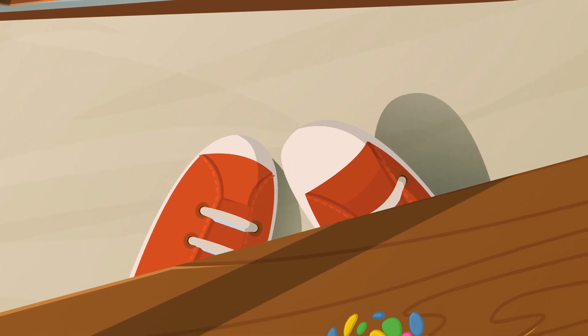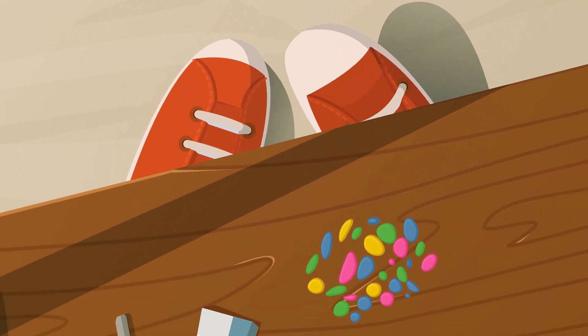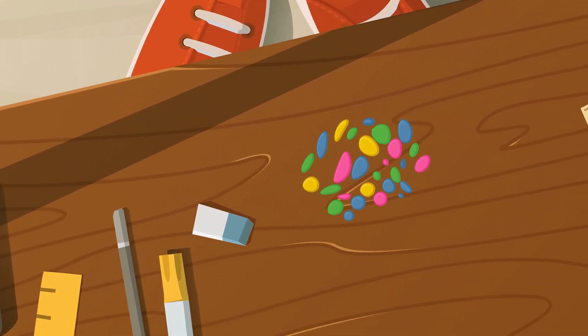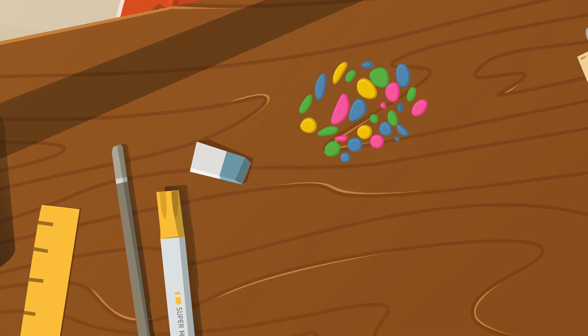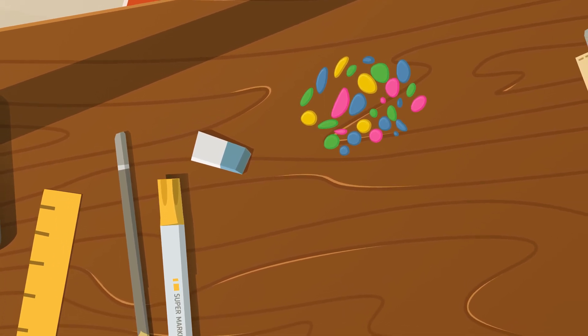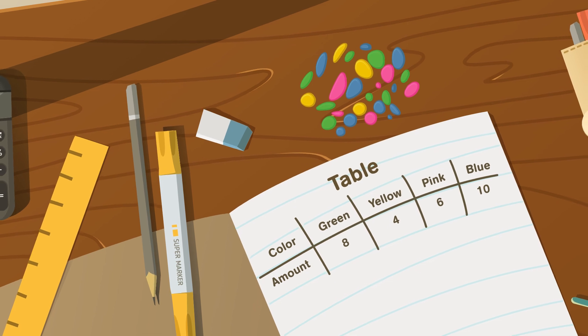Maria wants to make jewelry for her friends. She collects sea glass on the beach near her house. Maria finds lots of different colors. She records her data in a table.